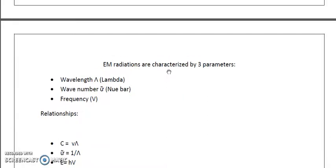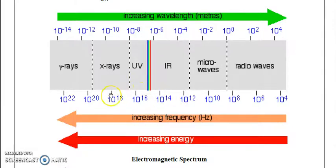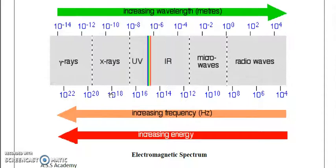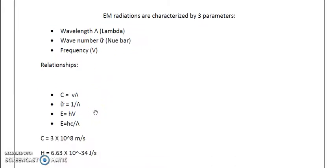Ultraviolet light is divided into: UVA ranging from 320 to 400 nm, UVB from 280 to 320 nm, and UVC from 100 to 280 nm (or less than 280 nm depending on the reference). Three parameters characterize a wave: lambda (wavelength, measured in meters or centimeters), wave number (1/lambda), and frequency (SI unit: hertz). The relationship is: speed equals frequency times wavelength.